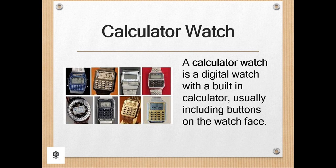Most calculator watches contain only a few functions, such as add, subtract, multiply, divide, and percents. However, there are several models with additional functions, including scientific functions such as transcendentals and trigonometry, in models Casio CFX-200, CFX-400, and Citizen 49-9421, financial functions, and also TV remote control functions.